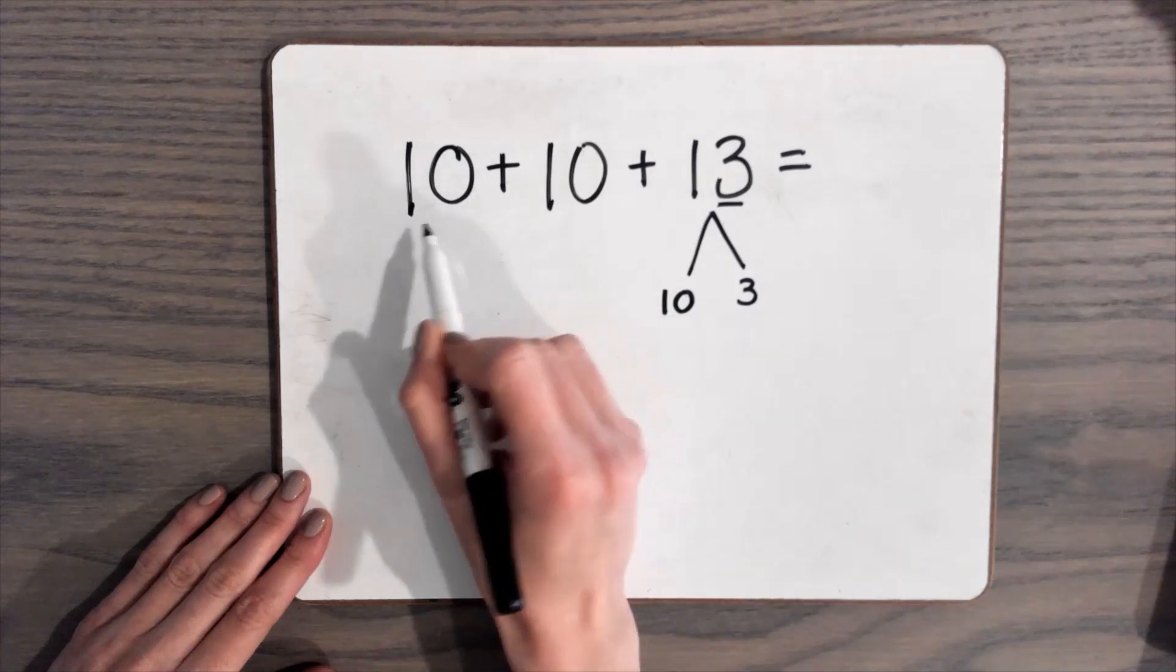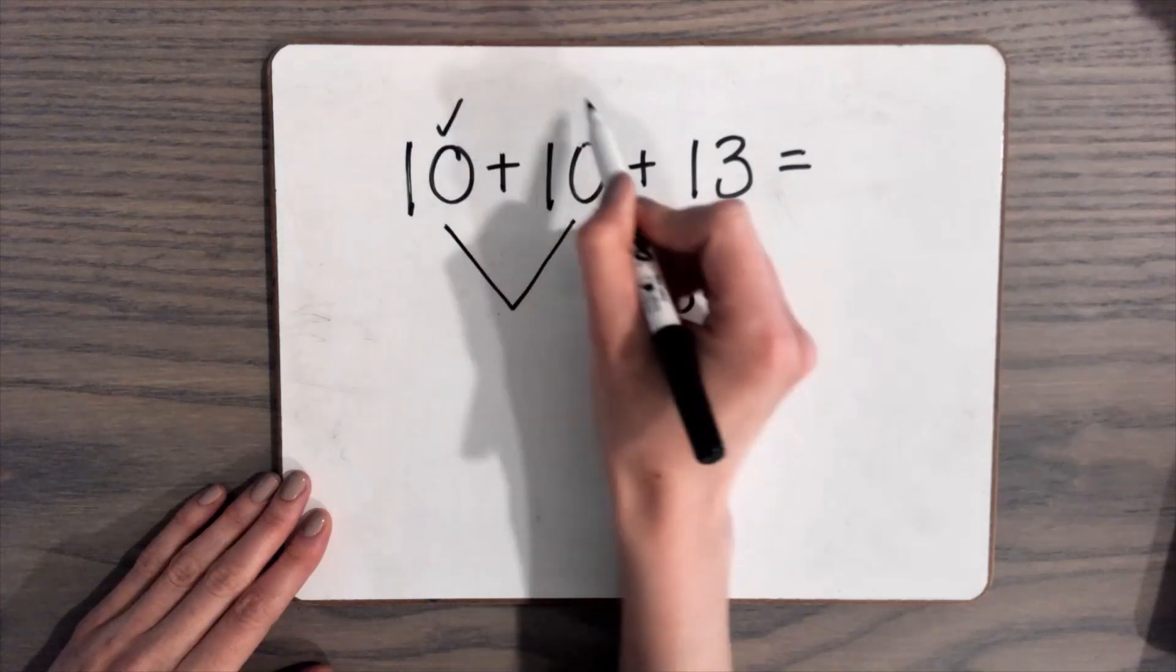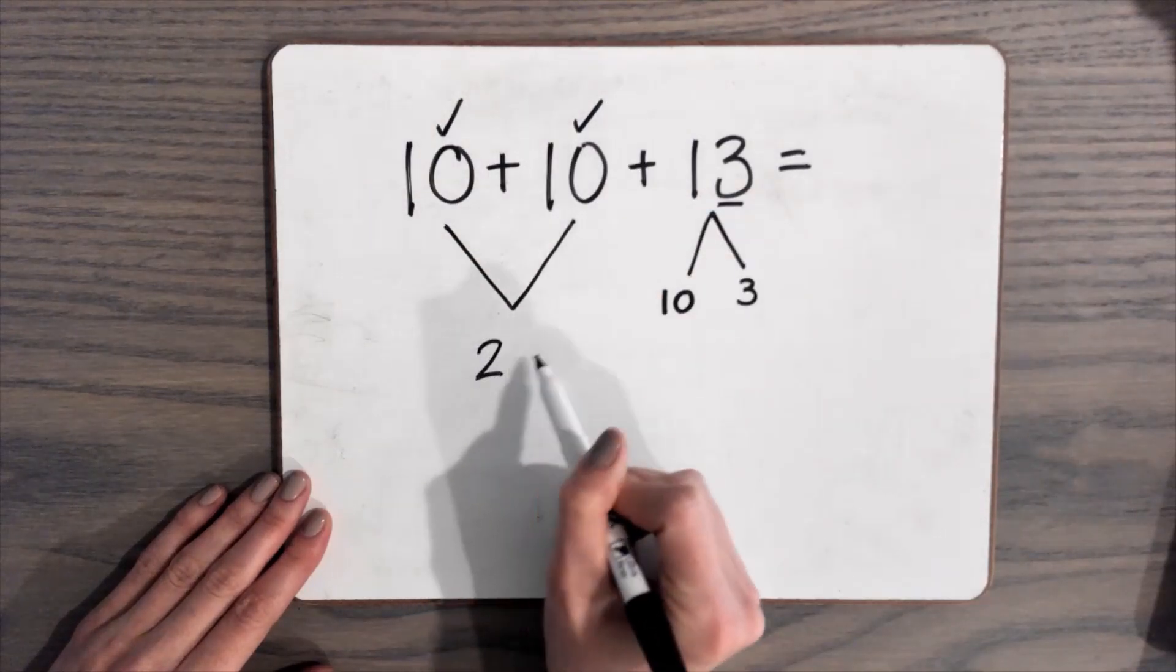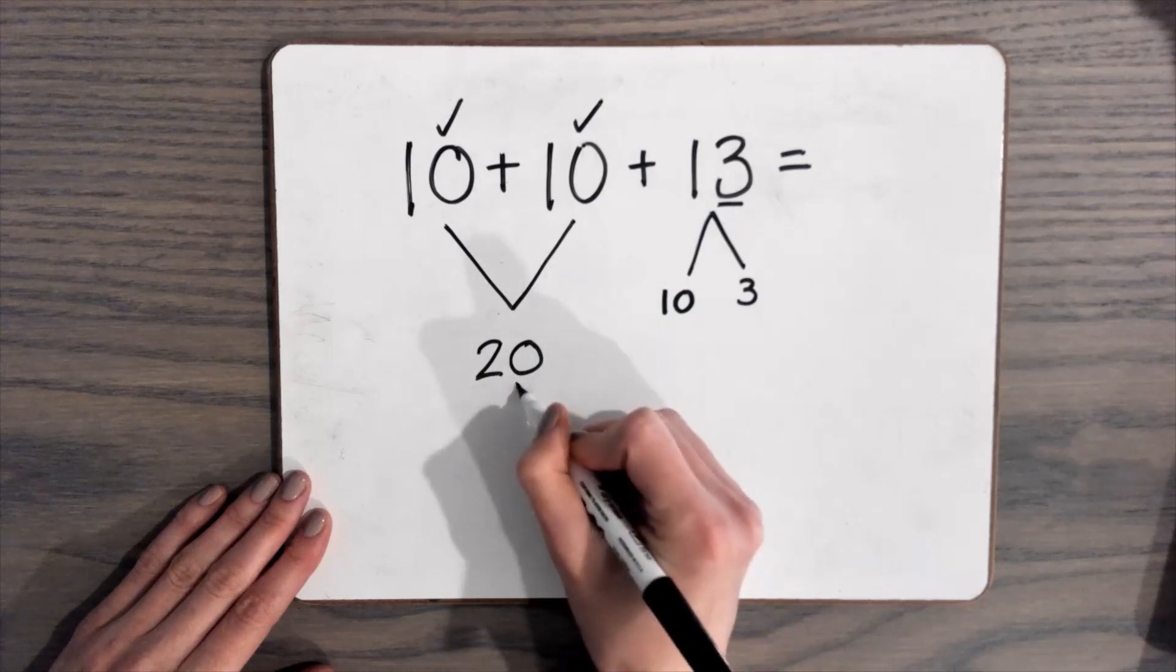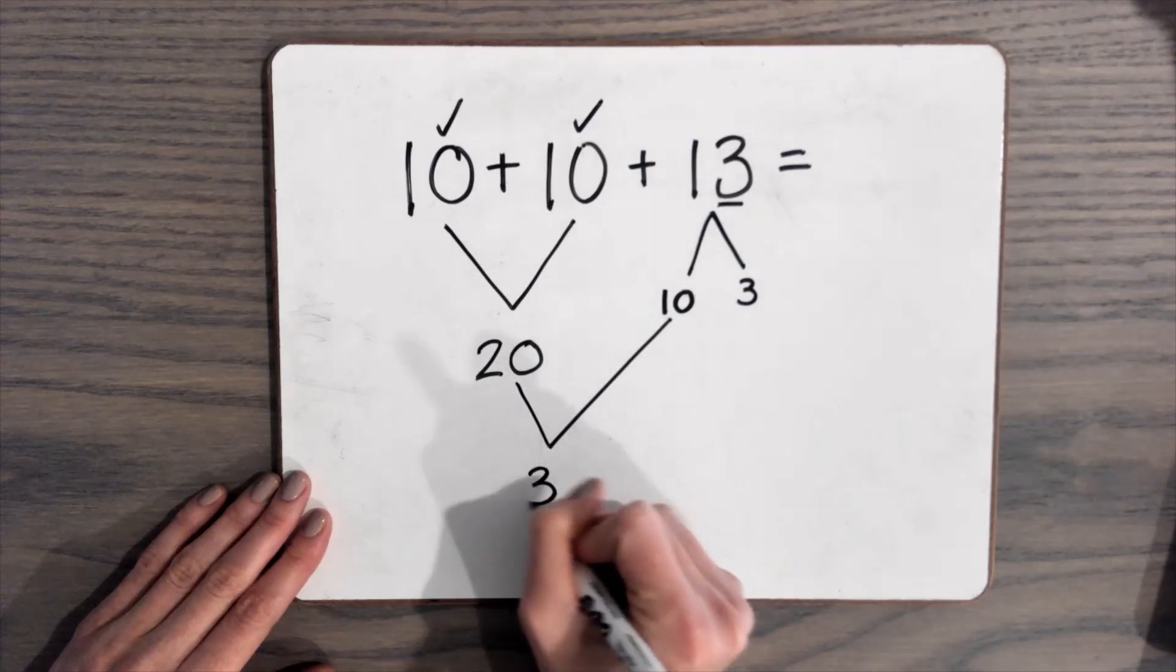So now we can add with 10, and that's easier to work with. So now let's start adding all of our numbers up. We have 10 plus 10 is 20, and then 10 more is 30.